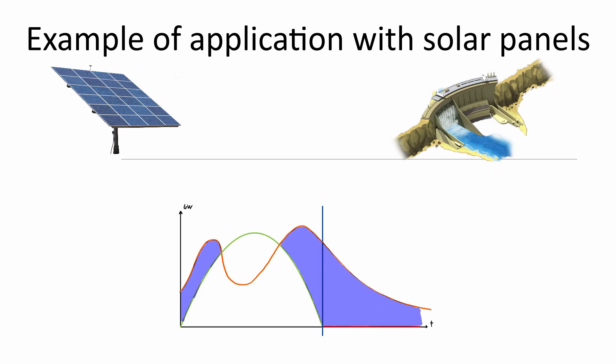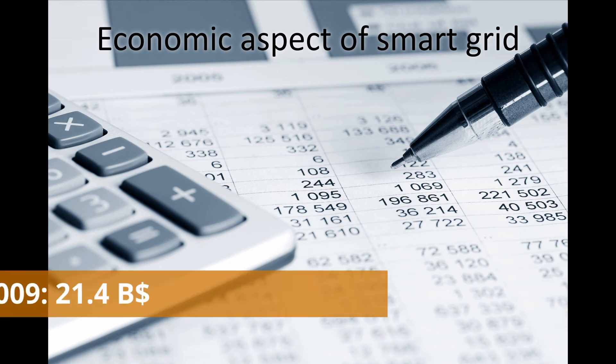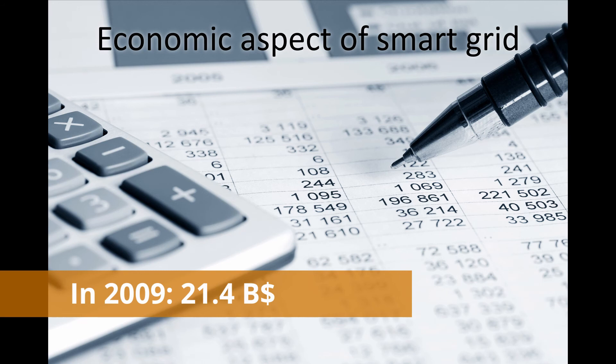With green we have the solar power, and in blue the hydroelectric power. Finally, let's analyze the economics behind this technology. In 2009, the US smart grid industry was valued at about 21.4 billion dollars.